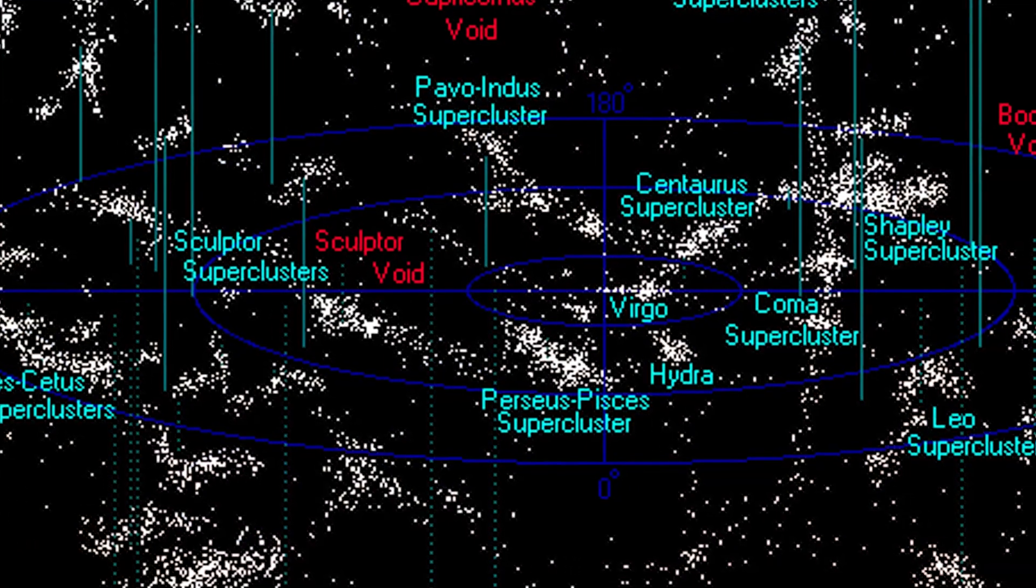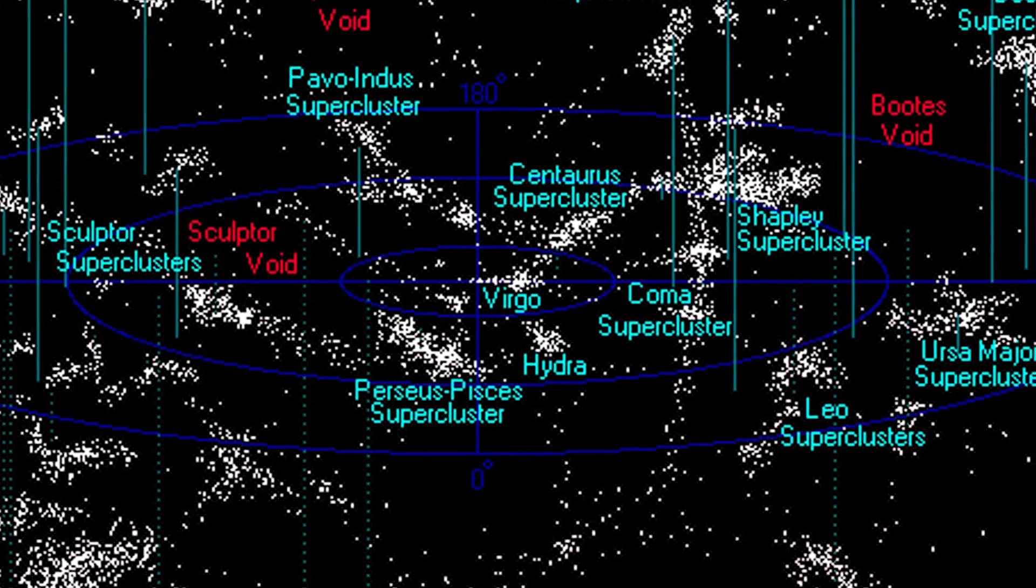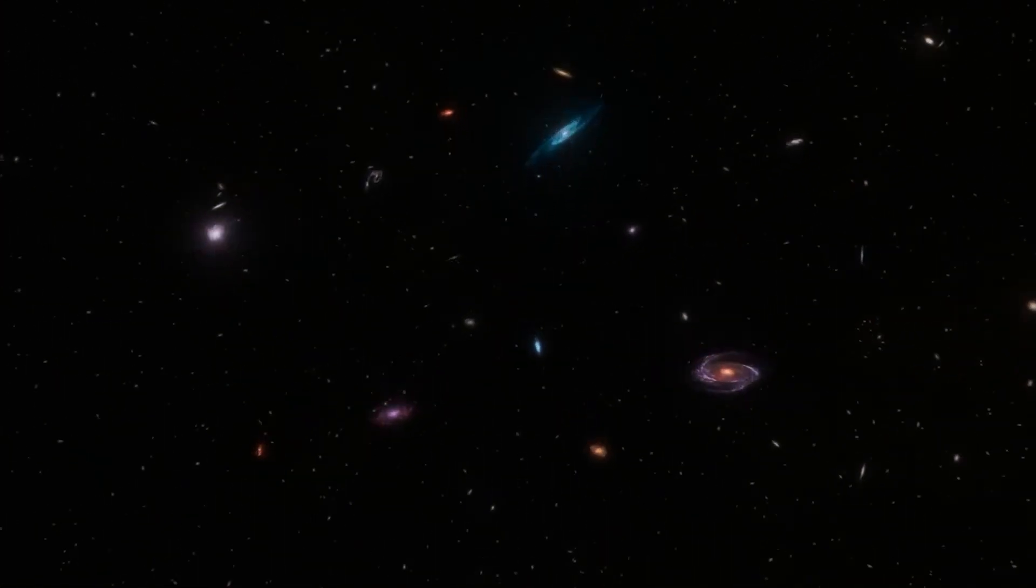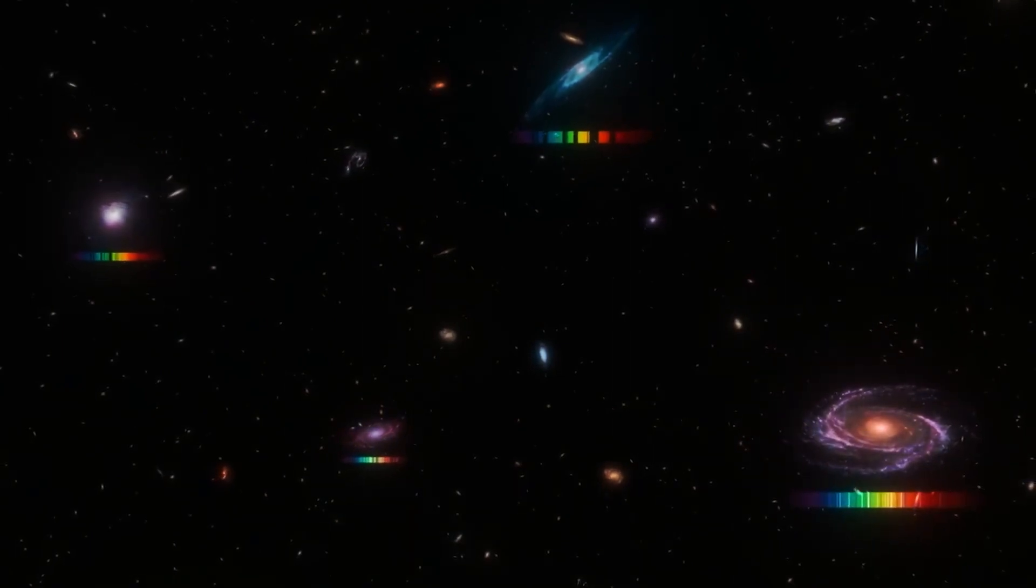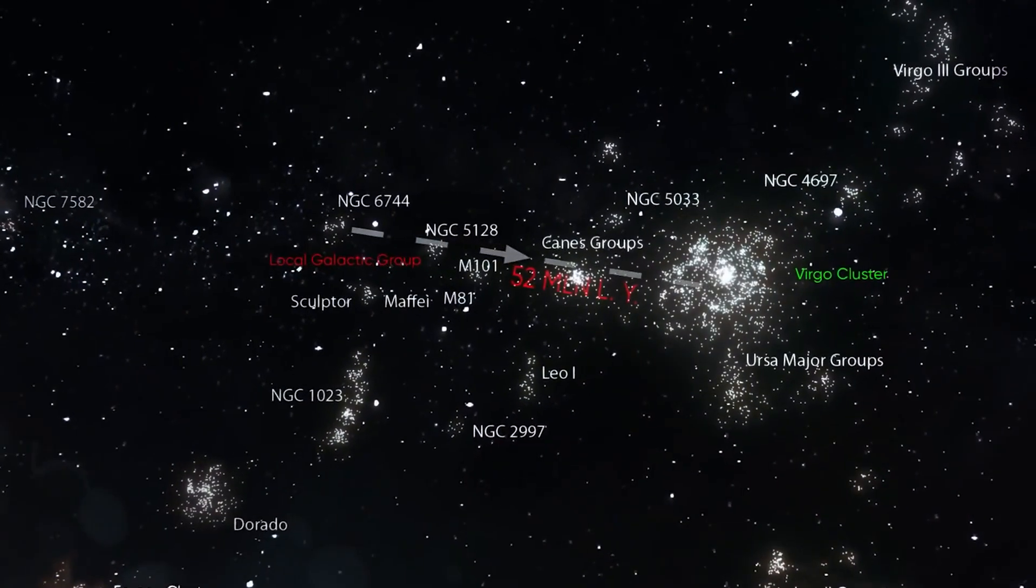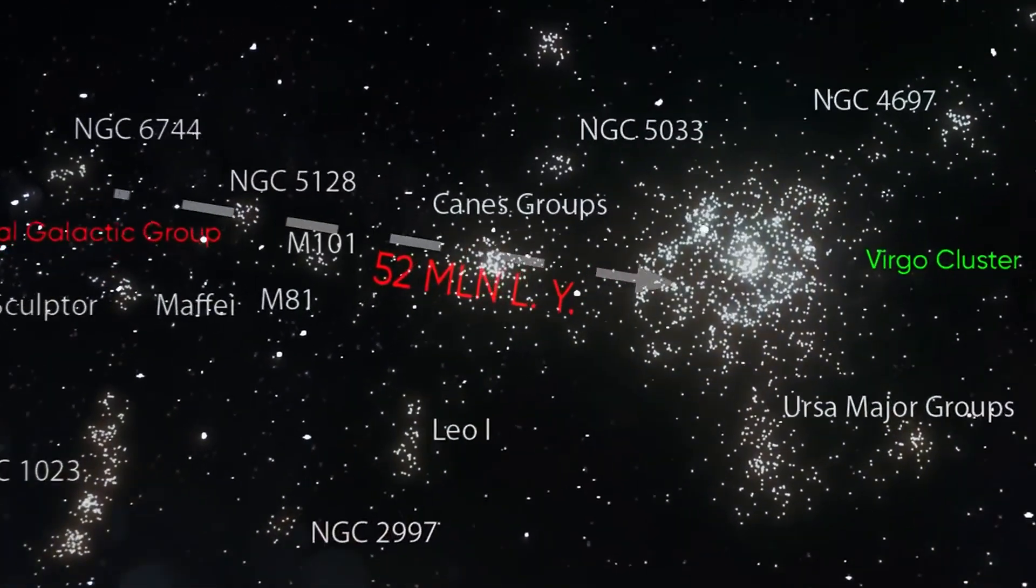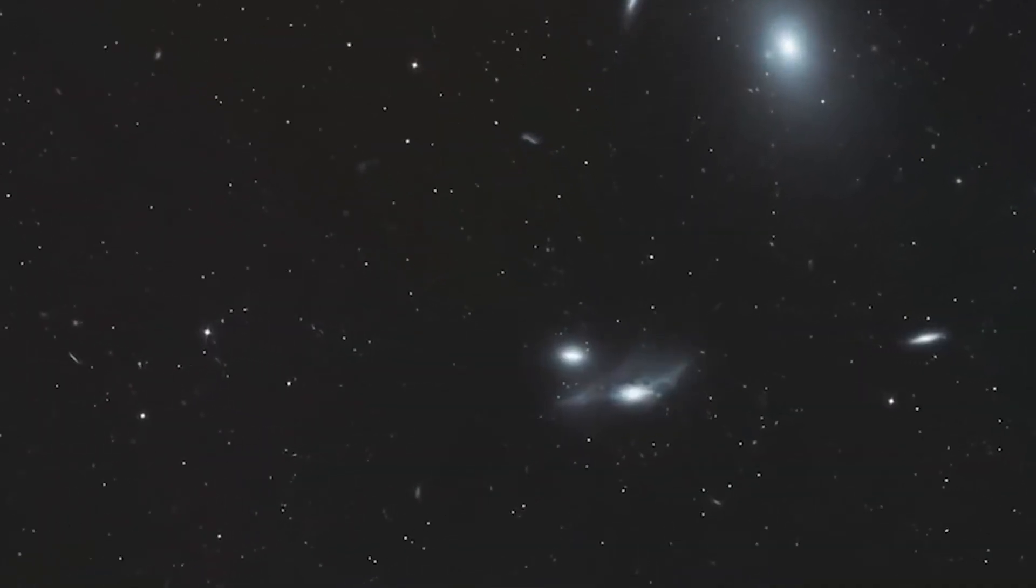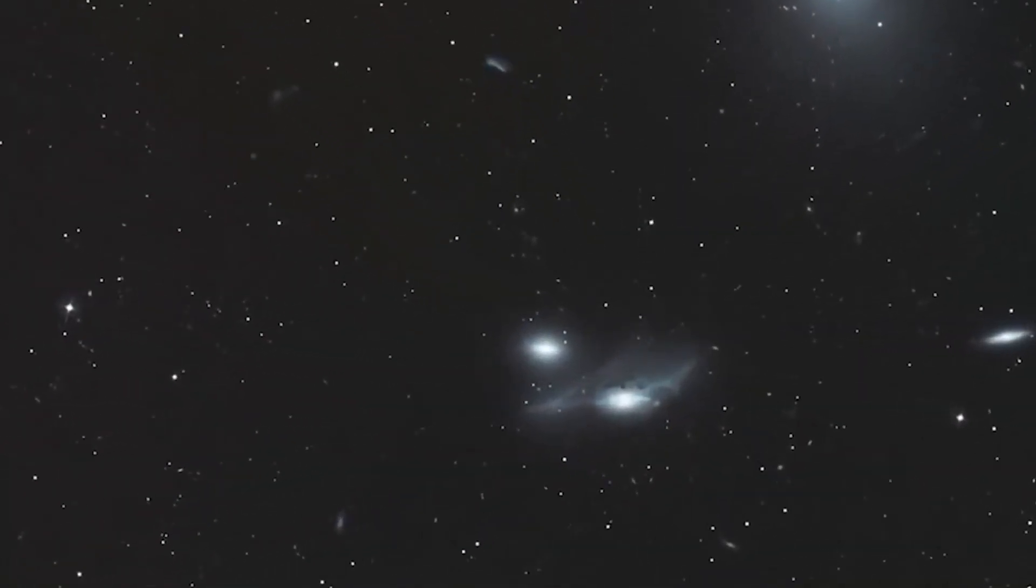But the mysteries of Boötes Void don't end with its size and emptiness. Some of the galaxies residing within this colossal void are arranged in peculiar tubular structures. What forces or phenomena led to this bizarre galaxy arrangement? The answers remain elusive, adding yet another layer of intrigue to this cosmic enigma.